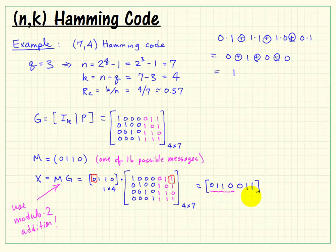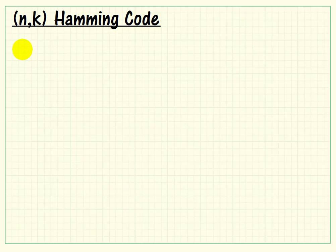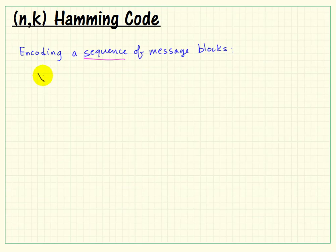There's our codeword X, so we can identify the original message. Then we identify these as being the three check bits that have been calculated by our generator matrix. That was an illustration for a single message vector.